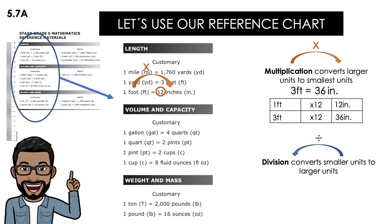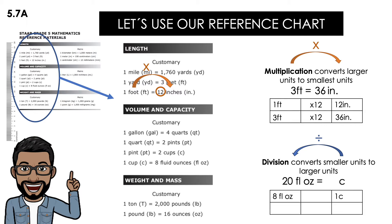Division is used when converting smaller units into larger ones. Remember to use your input-output table to solve this. In your reference chart it says that one cup is equal to eight fluid ounces, so eight fluid ounces equals one cup. To get from eight to one, I divide by eight. So 20 fluid ounces divided by eight is equal to two and a half cups.